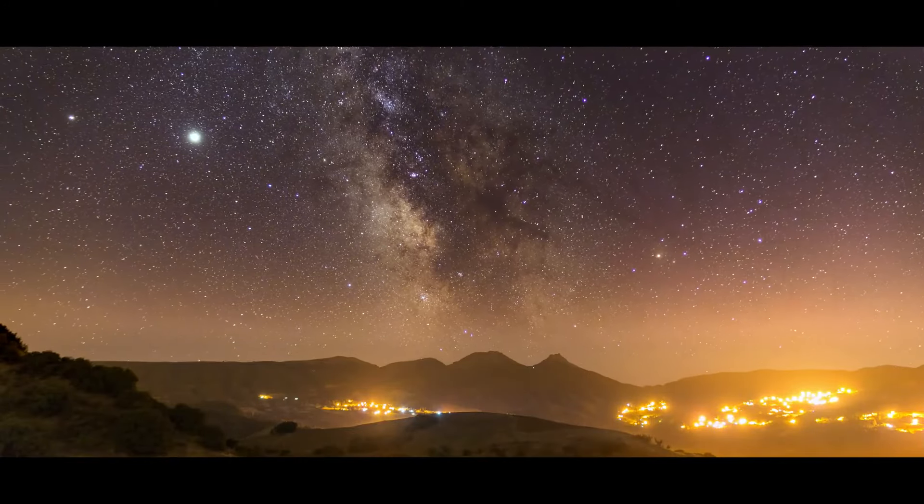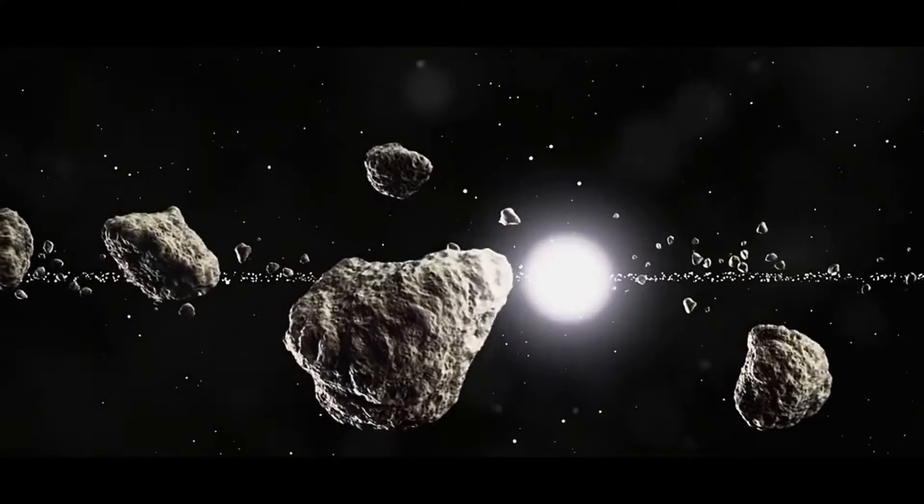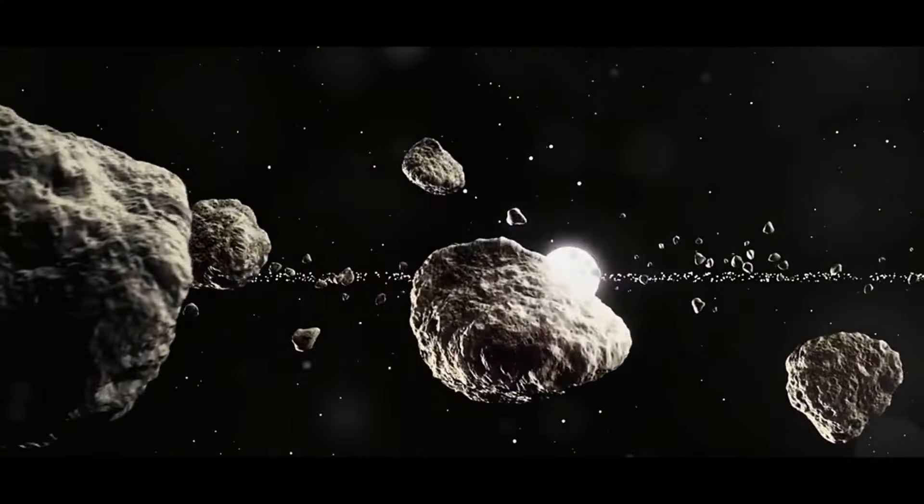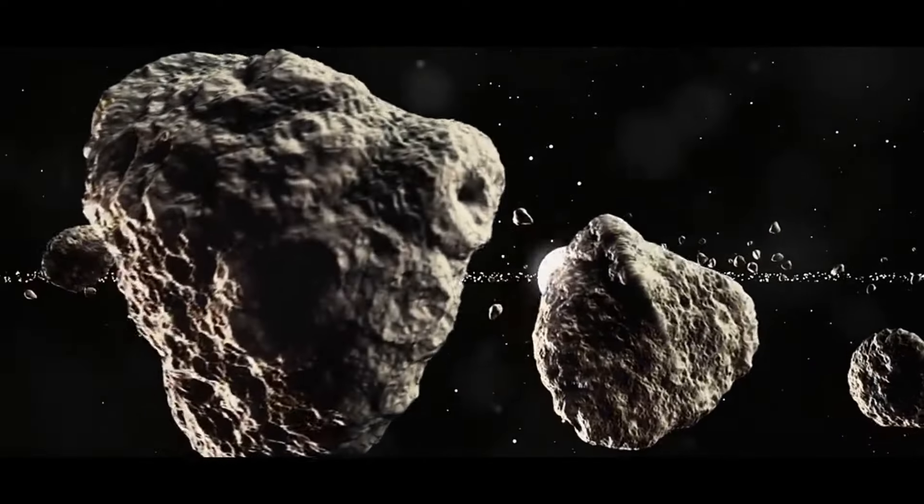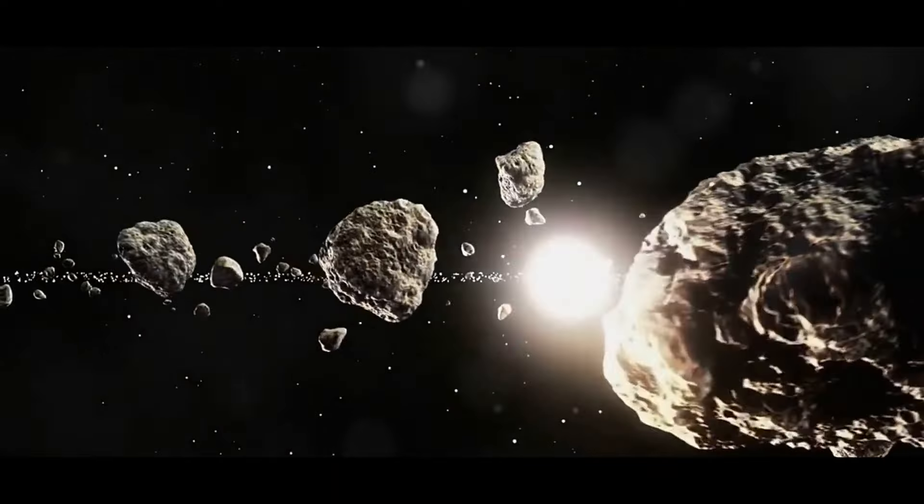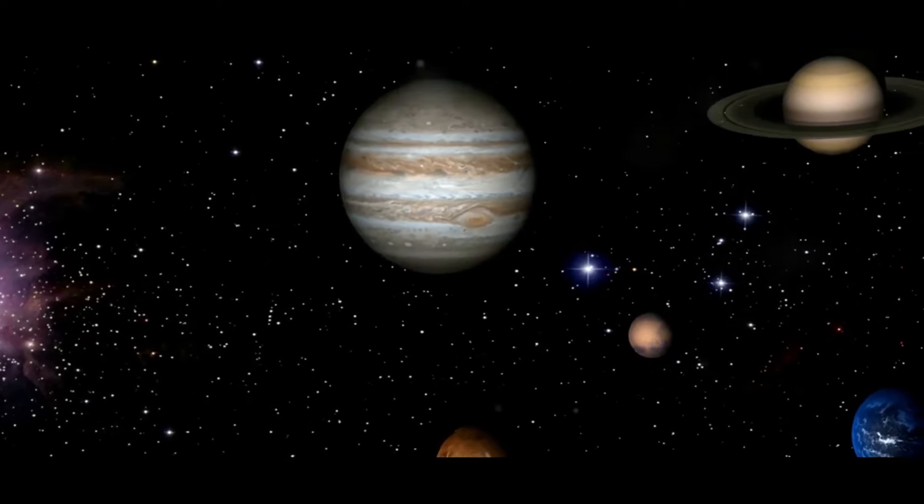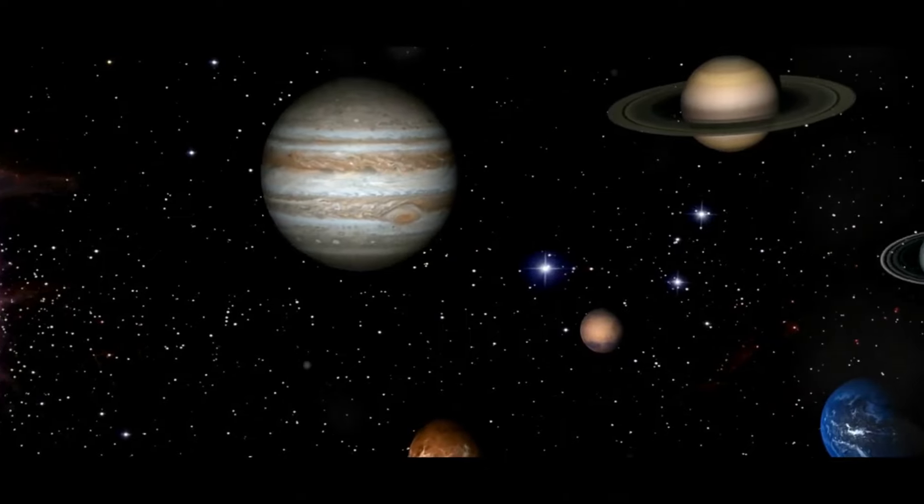Closer to home, the threats might be smaller, but they're far more probable. Asteroids and comets, the silent wanderers of our solar system, have danced around the sun for billions of years. Occasionally, their orbits intersect with Earth's path, transforming them from celestial spectacles to potential peril.